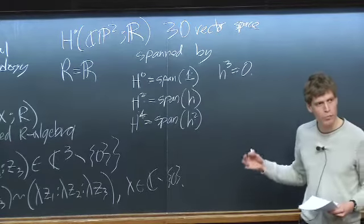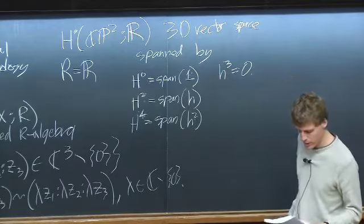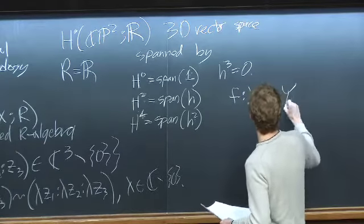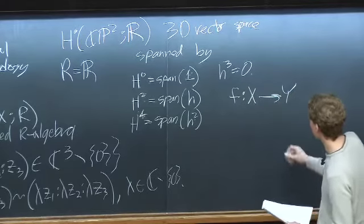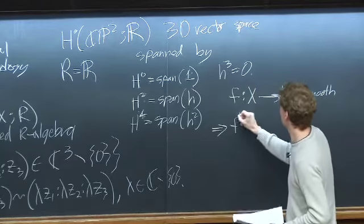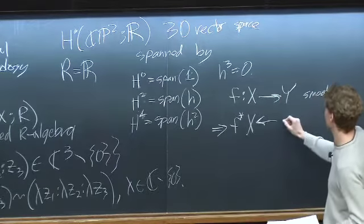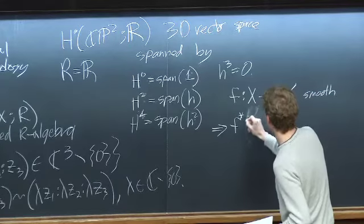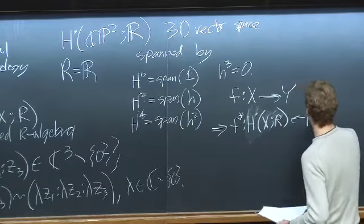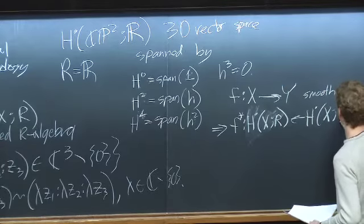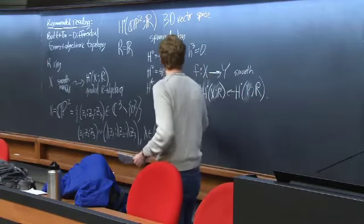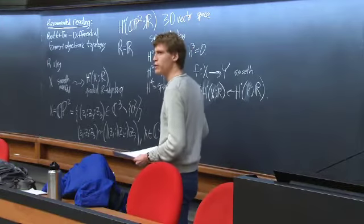Another very important property is that cohomology is a functor. This means that if f is a smooth map between smooth manifolds X and Y, this is going to induce a map f-star going in the opposite direction on cohomology. Identity maps go to identity maps and compositions go to compositions.